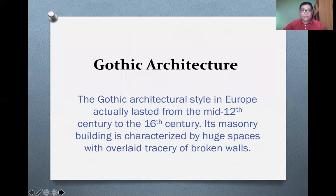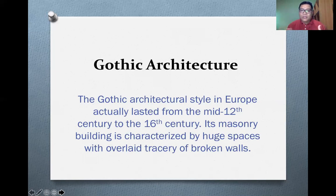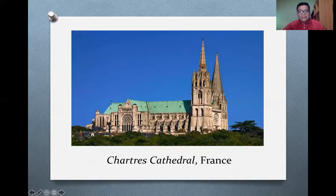We also have Gothic architecture. The Gothic architectural style in Europe lasted from the mid-12th century to the 16th century. Its masonry building is characterized by huge spaces with overlaid tracery of broken walls. These architectural structures are wide and often have overlaid tracery. One good example is this cathedral in France. Gothic architectural structures typically have pointed roofs, which is another distinctive feature.